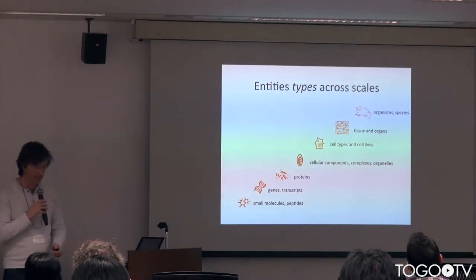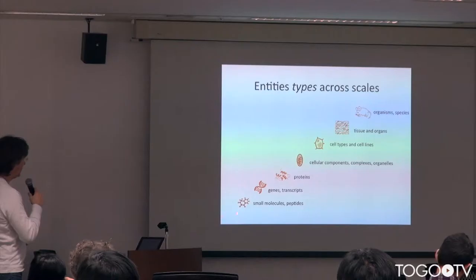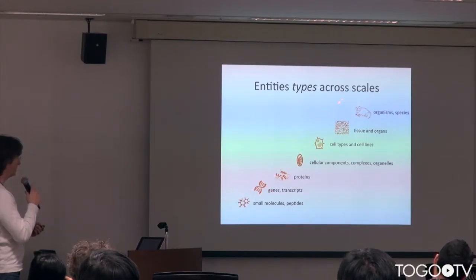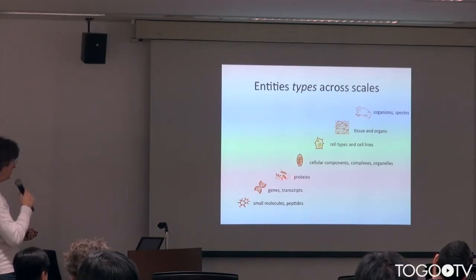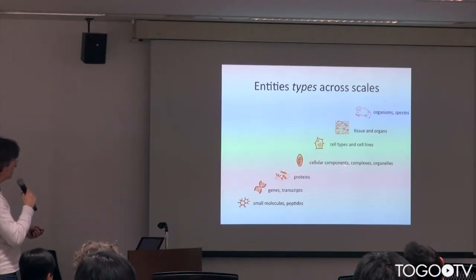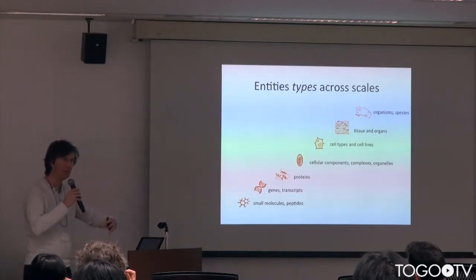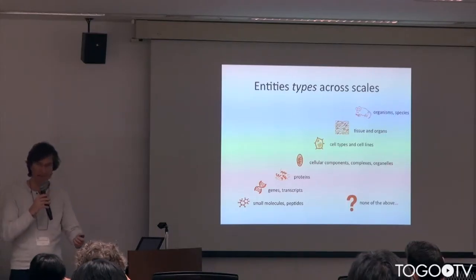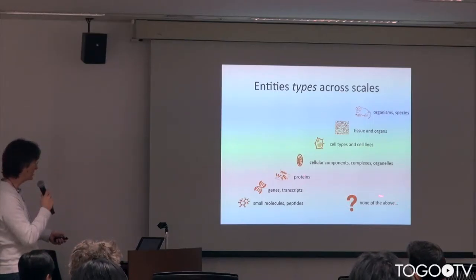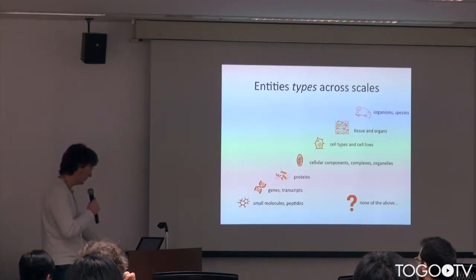The entity types we capture cover all the scales of biological organization: small molecules, genes and proteins or gene products, cellular components, subcellular protein complexes, cell types and cell lines, tissues and organs, and full organisms. With this we can cover essentially all the scales in cell and molecular biology. It doesn't represent all of biology, and there will inevitably be some holes — things we cannot represent — but we still capture them as undefined so that retrospectively we can analyze the gaps.